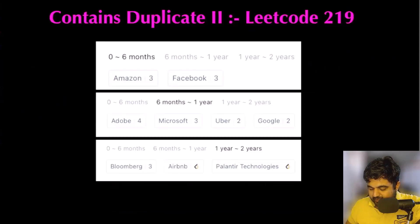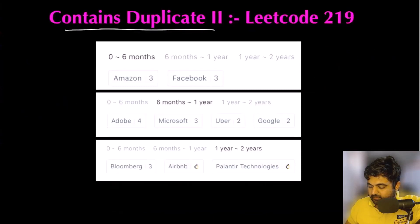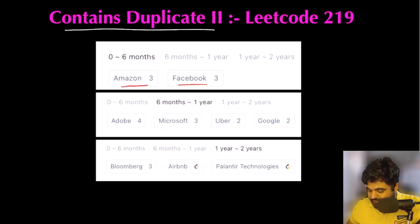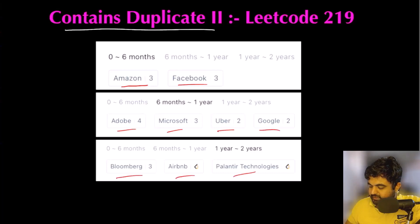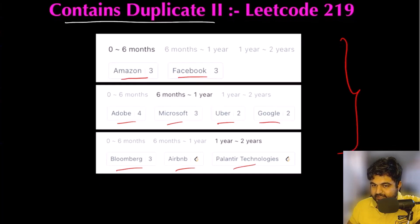As an example, we are trying to solve the Contains Duplicate II problem. This is a very popular LeetCode problem that has been asked at some popular companies like Amazon, Facebook, Adobe, Microsoft, Uber, Google, Bloomberg, Airbnb, and plenty more. These are all tech giant companies who love asking this question, so that is why I considered this one.